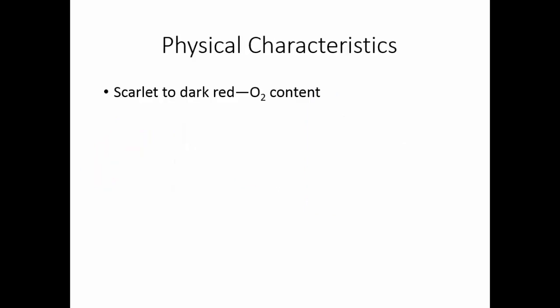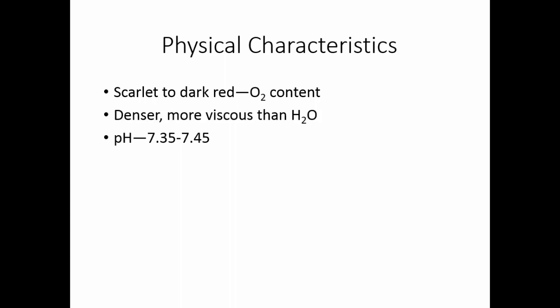Blood is scarlet to dark red depending upon the oxygen content. Oxygen makes the blood more scarlet in color; lack of oxygen gives blood a dark, mahogany red color. Blood is thicker than water — it is denser and more viscous. Viscosity has to do with the thickness and stickiness of the blood. Blood pH is very narrowly controlled between 7.35 and 7.45, and its temperature is 38 degrees centigrade, or 100.4 degrees Fahrenheit.